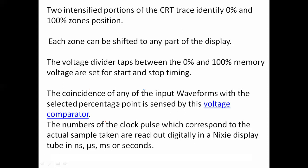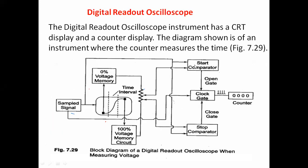The coincidence of any of the input waveforms with the selected percentage point is sensed by the voltage comparator. This comparator compares the sample signal with the selected voltage memory tapping — 0% tapping and 100% tapping. When the sample signal is compared with 0%, it produces the start pulse. When the sample signal is compared with 100% voltage memory, it produces the close pulse. In between, the clock gate produces samples that are counted for display.